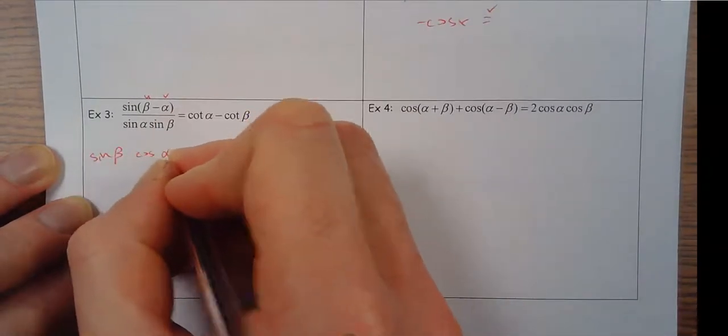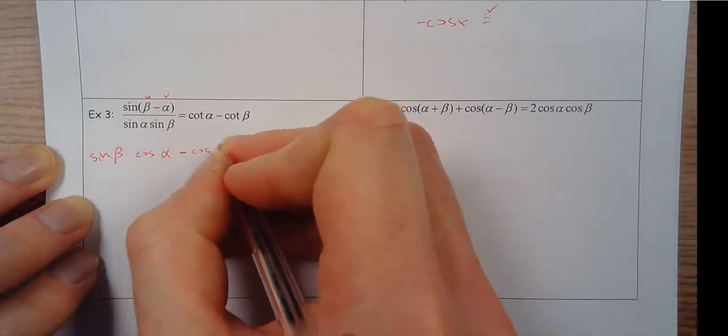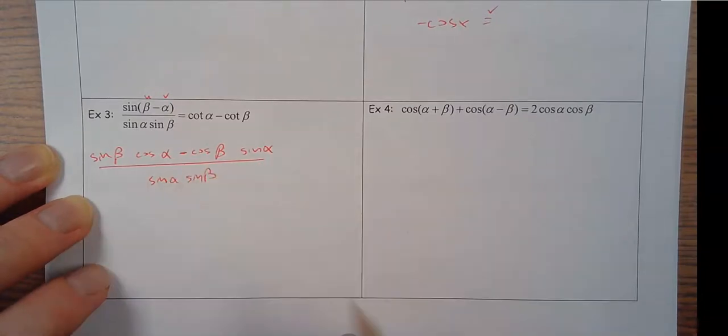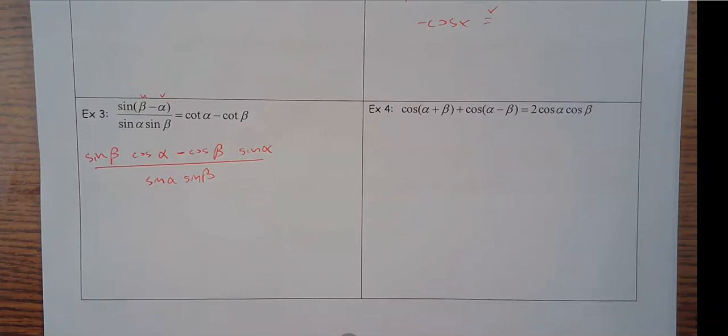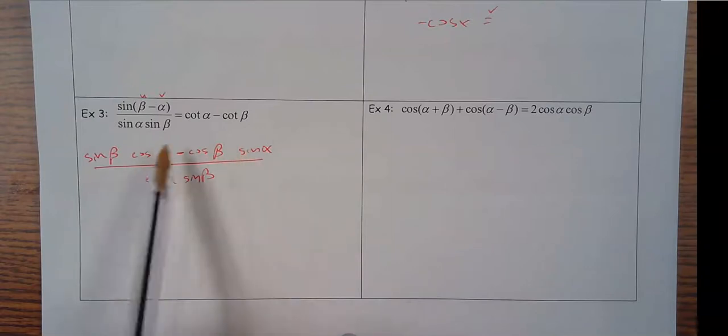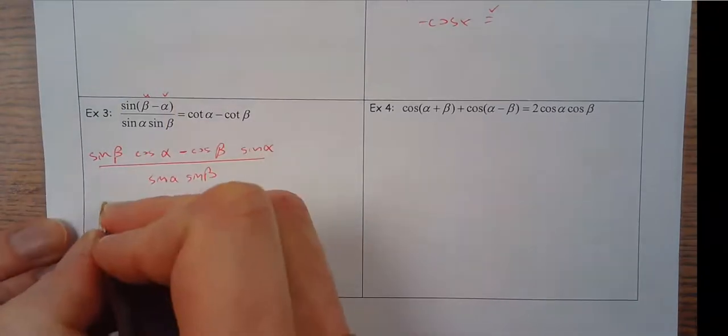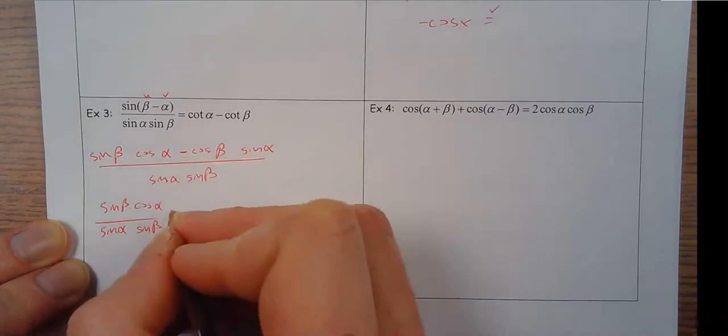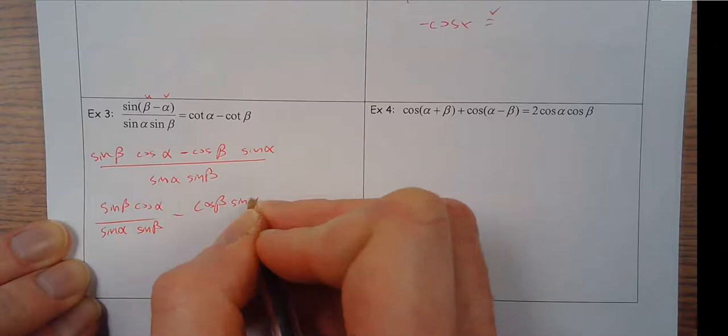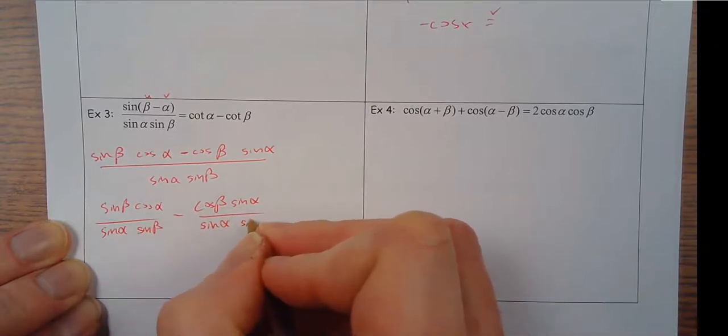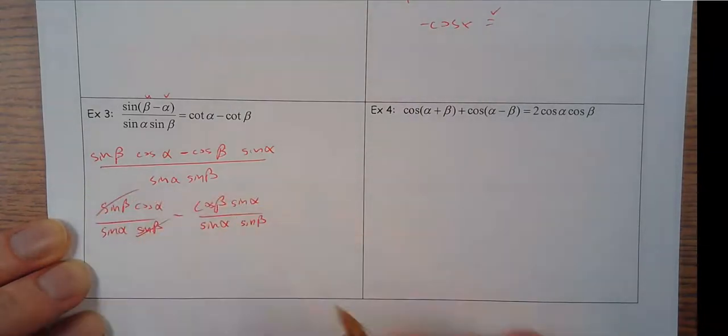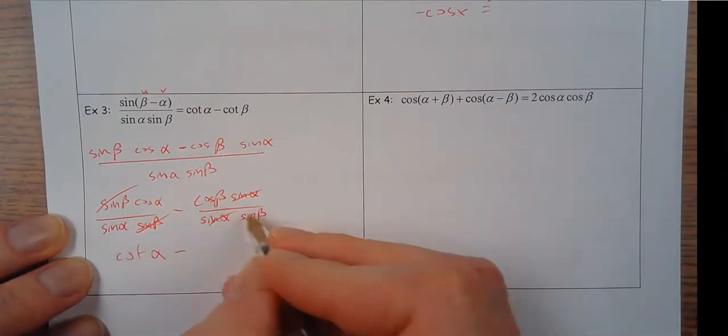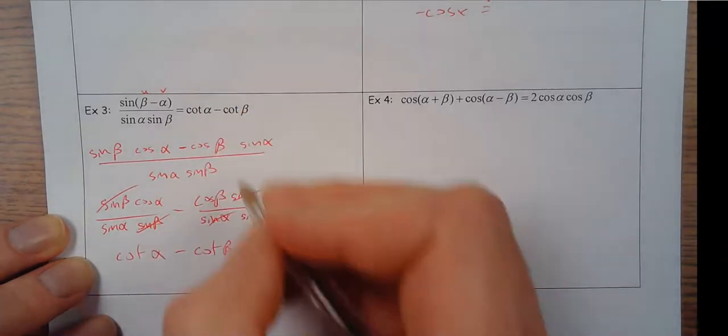So beta, alpha, and then beta, alpha. And this is all over sine alpha, sine beta. What I could do here, let's see. So there, I'm subtracting two things over this. I could put each one individually over this. So sine beta, cosine alpha over this denominator, minus, and then over the denominator, and then sine beta, sine beta cancels, sine alpha, sine alpha cancels, and cosine over sine would be cotangent, minus, and then over here, this would also be cotangent. This is a beta, which is what I'm trying to verify.